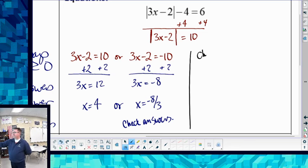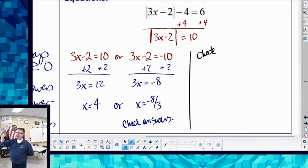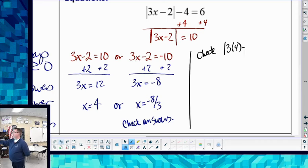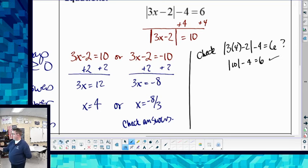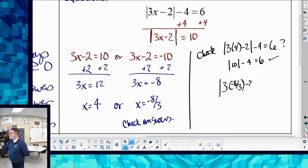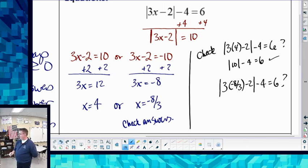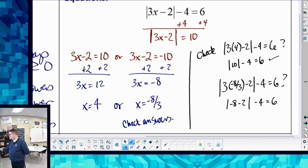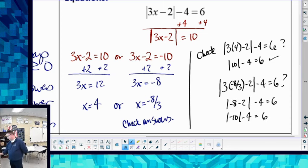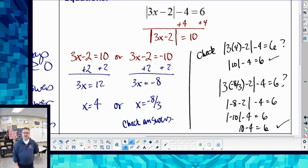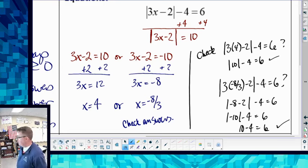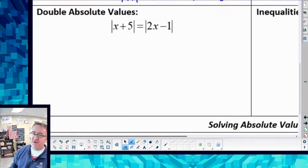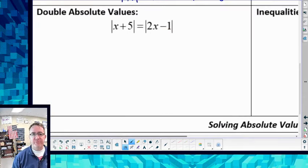So for the check, all you're going to do is just plug it back in. And again, there are going to be spots where that doesn't work. So you want to make sure that you don't fall for it. Now for double absolute values, the same thing holds true. The inside has to be equal to the outside.